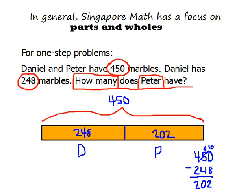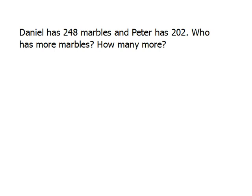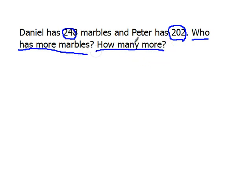There's a very basic problem done with the bar model. Let's up this a little bit. Daniel has 248 marbles and Peter has 202. Who has more marbles, and how many more? As always, let's start with our numbers: Daniel has 248, Peter has 202. It's asking two questions: who has more marbles, and how many more? Let's box our action words — more is definitely an action word. This looks like a comparison problem, so I'm going to need two bars: one to represent Daniel's marbles and one for Peter's.